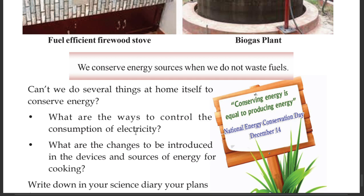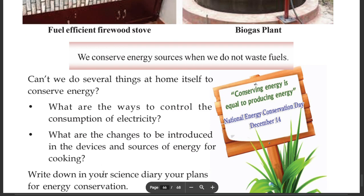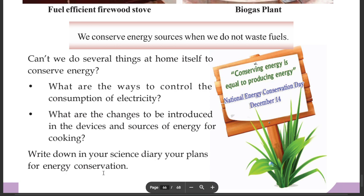What are the ways to control the consumption of electricity? What are the changes to be introduced to devices and sources of energy for cooking? You can write down in your science diary your plans for energy conservation. Conserving energy is equal to producing energy.